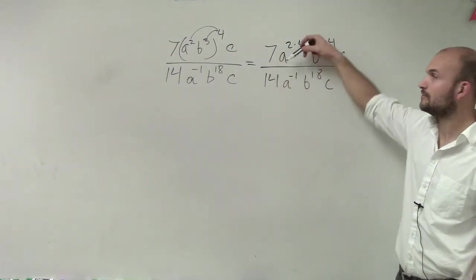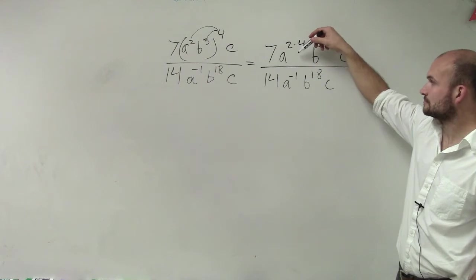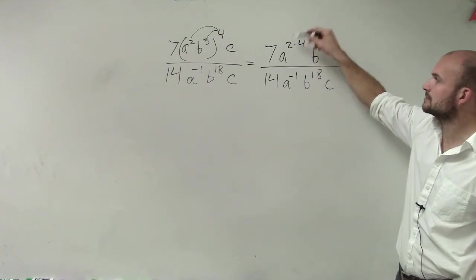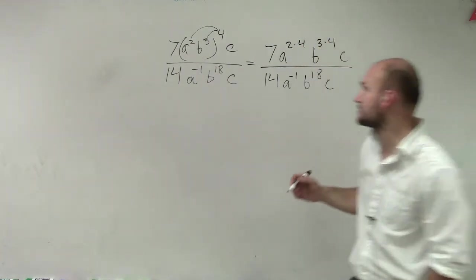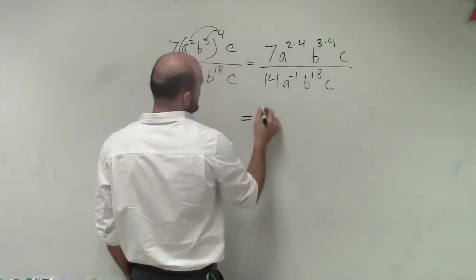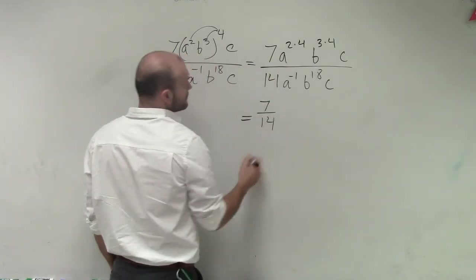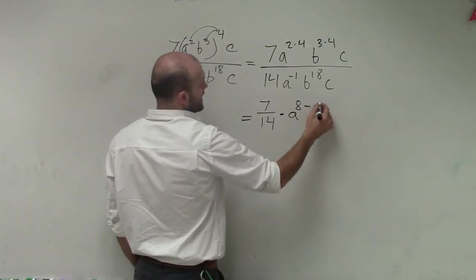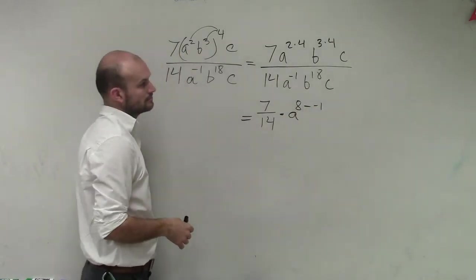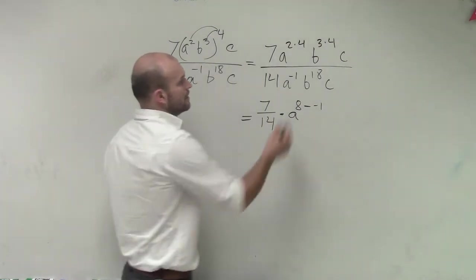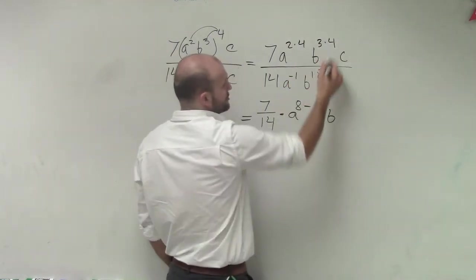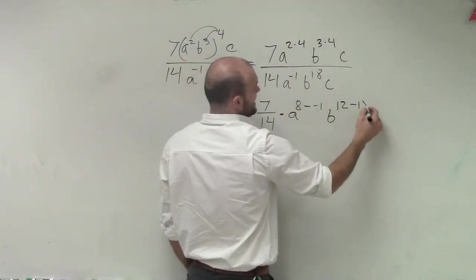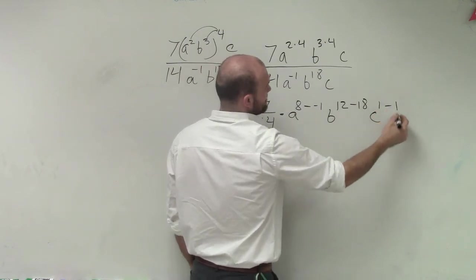OK, now we have a division, so we know we can subtract, right? So therefore, I'm still going to do 7 over 14 times—this is a to the 8th minus a negative 1, b to the 12th minus 18, c to the 1st minus 1.